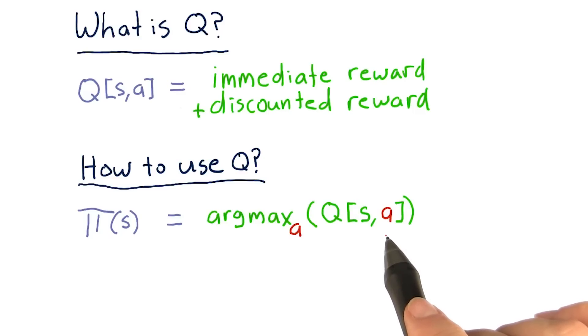And the one that is the largest is the action we should take. And the mathematical way to represent this is to use the function argmax. So argmax of A of this function. So what that does is it finds the A that maximizes this, and then the answer is A.